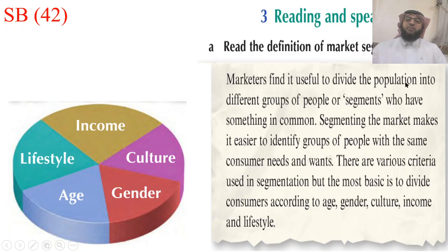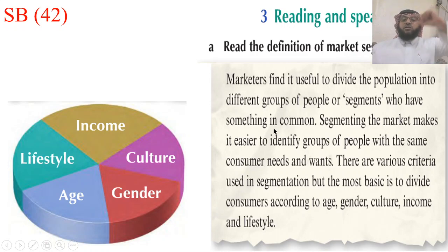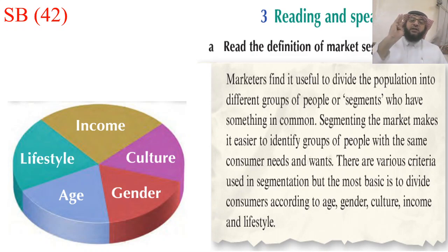Marketers find it useful to divide the population into different groups of people or segments who have something in common — داخل الـ income أصحاب الدخل المرتفع أو أصحاب الدخل المنخفض. Something in common — في أشياء مشتركة. Segmenting the market makes it easier to identify groups of people with the same consumer needs and wants. There are various criteria used in segmentation, but the most basic is to divide consumers according to age, gender, culture, income, and lifestyle. إذن هذه التقسيمات الخمسة.